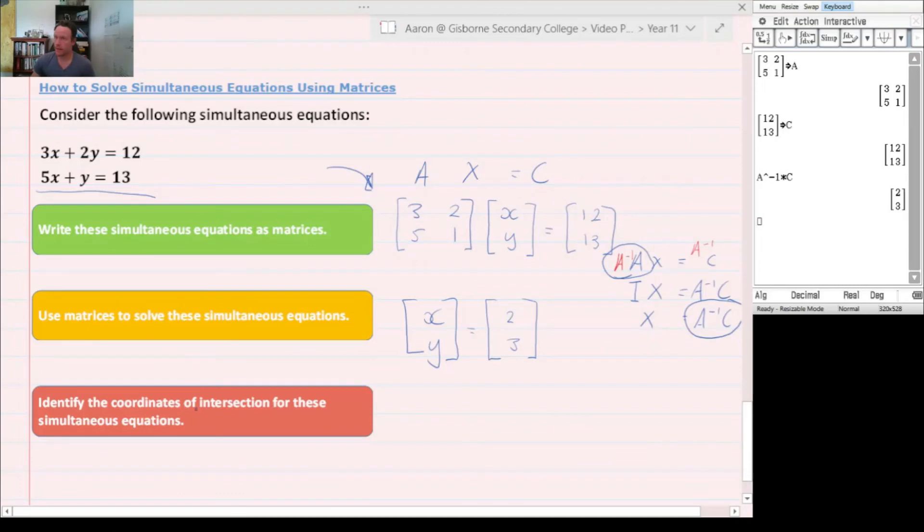So what we can now do is find the coordinates. Identify the coordinates of intersection for these simultaneous equations. We substitute these into those equations. So x equals 2, y equals 3.